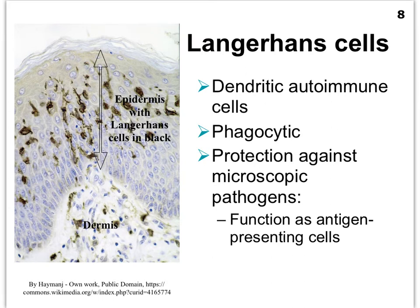Our third cell type is the Langerhans cell. This slide illustrates the epidermis with many dark specks representing Langerhans cells — notice there are probably some in the dermis as well, since they can wander around. They act very much like macrophages; even though they are considered dendritic cells, they also go through phagocytosis to digest pathogens. After digesting a pathogen, they allow little proteins that are part of the pathogen to stick out from their cell membranes, functioning as antigen-presenting cells — with antigens being little chunks of proteins belonging to the pathogen.